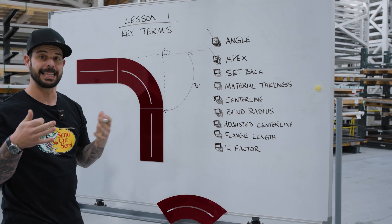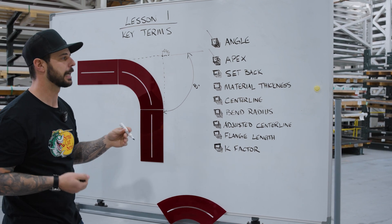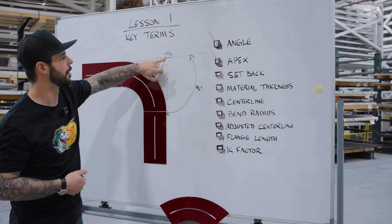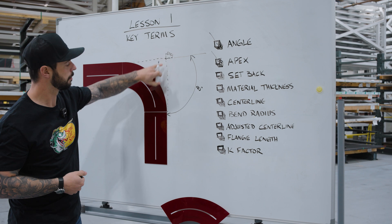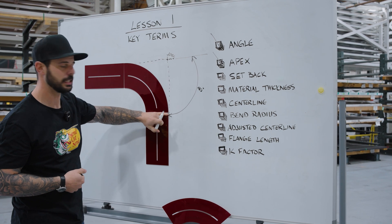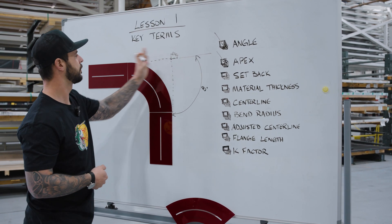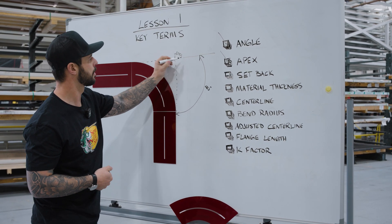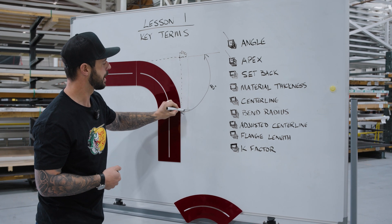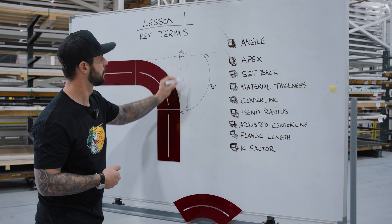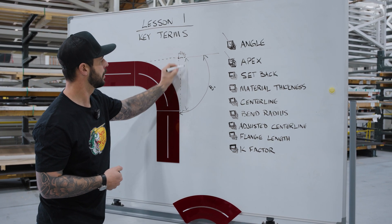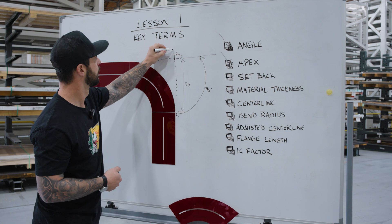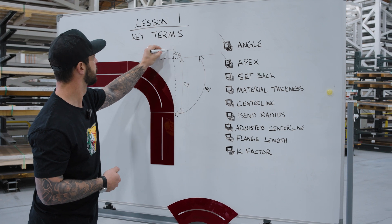The first measurement off the apex is the setback. Setback is the measurement from that apex back to the tangent point. We have two measurements — the top one and the bottom one — and we're going to label this SB for setback.